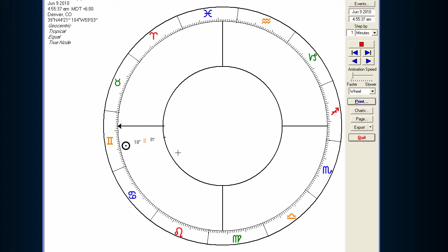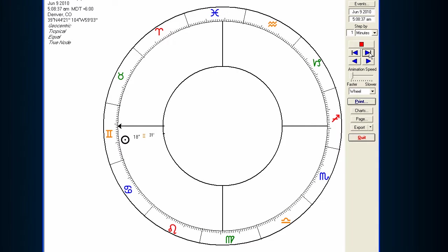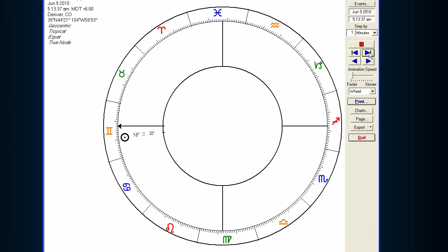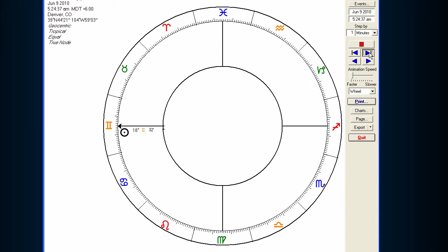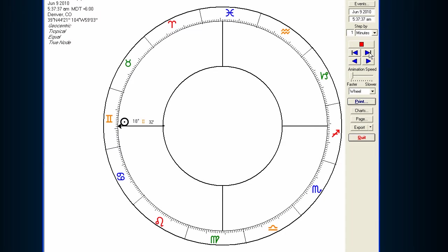Right now the Sun is just below the Descendant, so it's actually just before it rose in the morning, at about 5 o'clock in the morning. What I'm going to do is start animating the chart, and you can see that when you move the chart forward by one minute a second, you can actually see the Sun rising over the horizon.